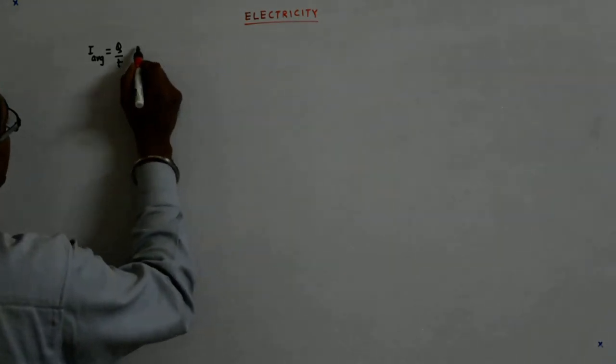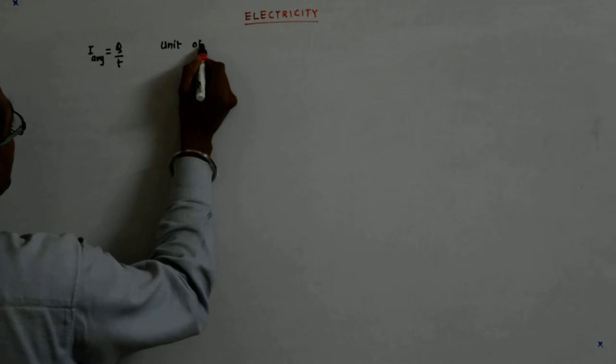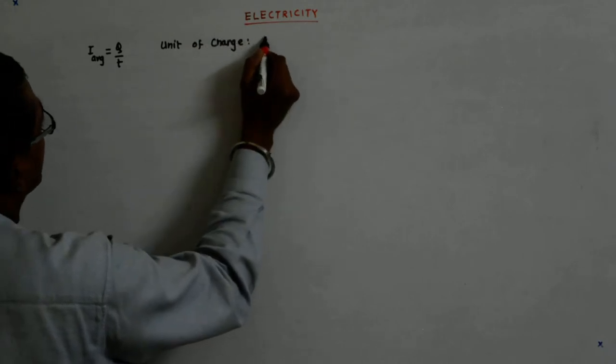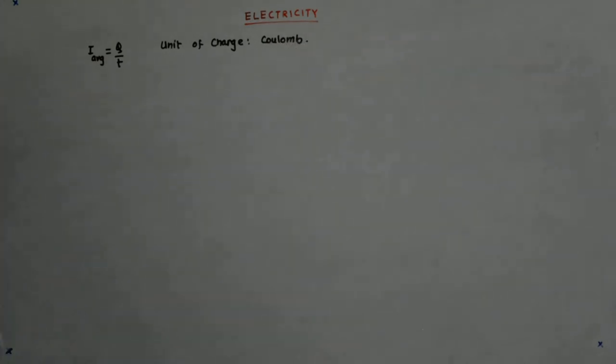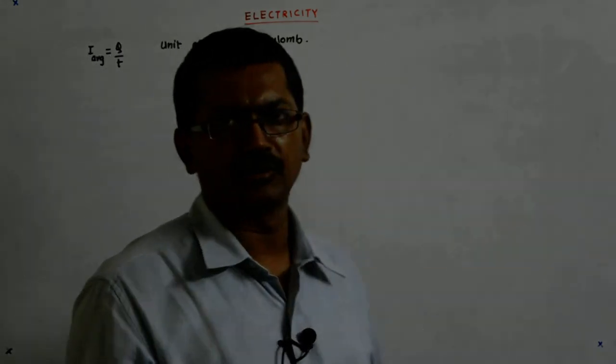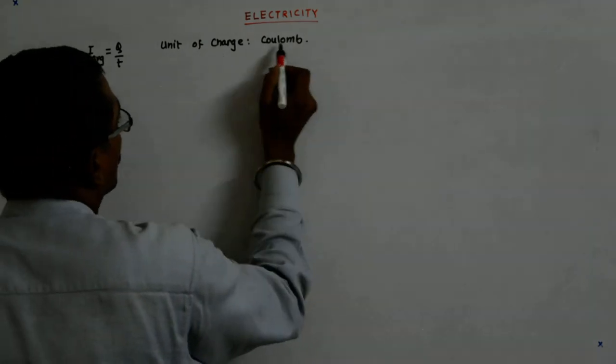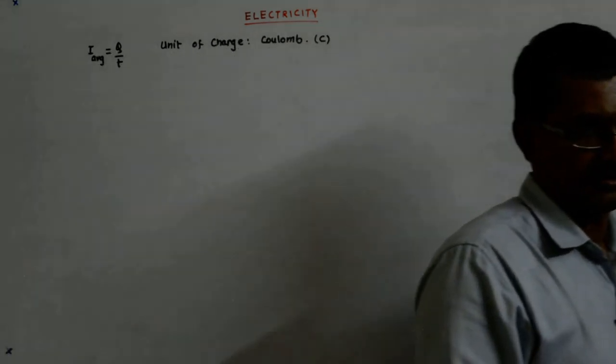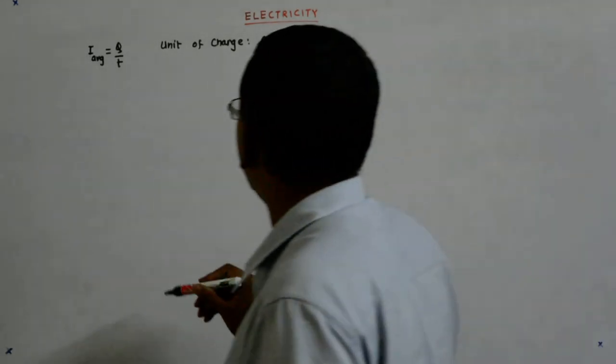It is q upon t and the unit of charge is coulomb. Coulomb was a scientist, so since the unit is after the name of the scientist, it is a proper noun, so it is always written in capitals.